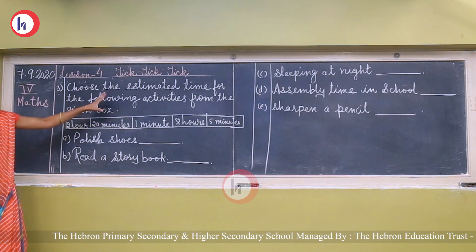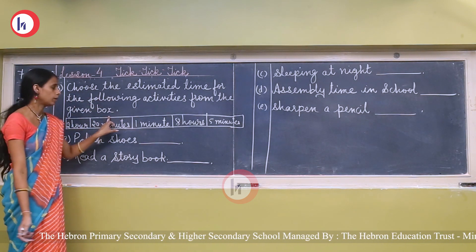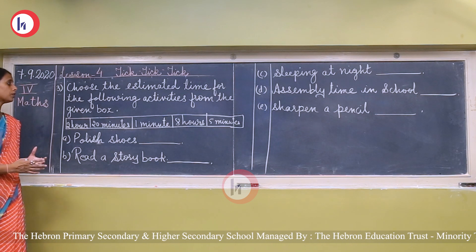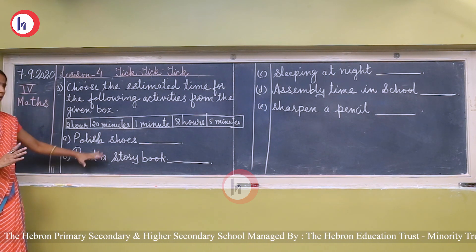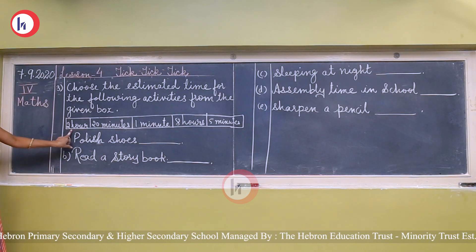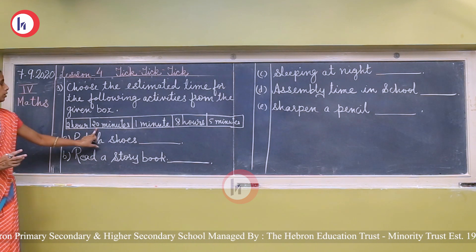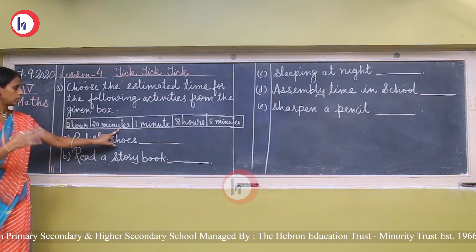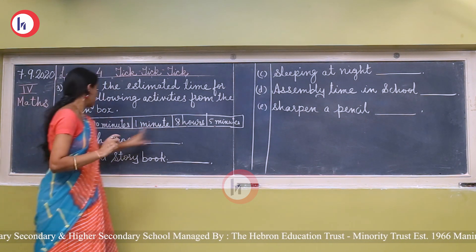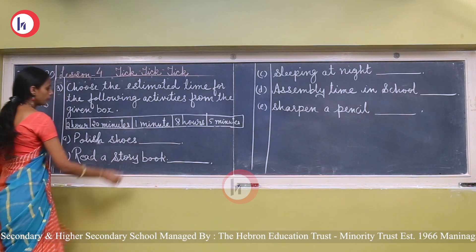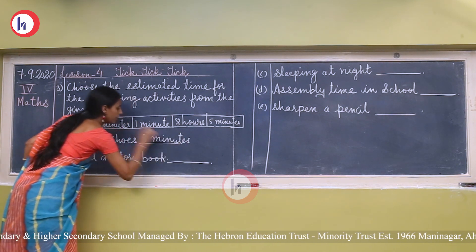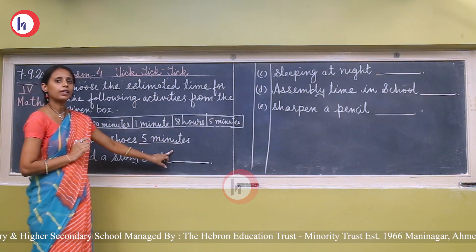Next question: choose the estimated time for the following activities from the given box. The times given are: 2 hours, 20 minutes, 1 minute, 8 hours, and 5 minutes. First activity: polish shoes. We can complete this in 5 minutes. So the answer is 5 minutes.